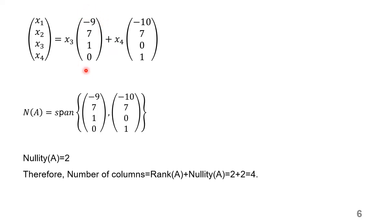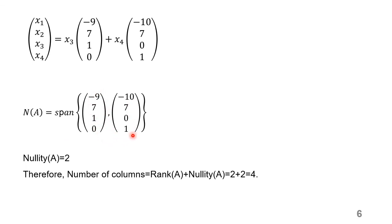The second equation can be written as x2 − 7x3 − 7x4 = 0, so x2 = 7x3 + 7x4. Substituting this in the first equation, we get x1 = −9x3 − 10x4. Writing in matrix form with the 4 variables x1, x2, x3, x4, the two basis vectors are [−9, 7, 1, 0] and [−10, 7, 0, 1]. The null space can be written as the span of these two basis vectors.